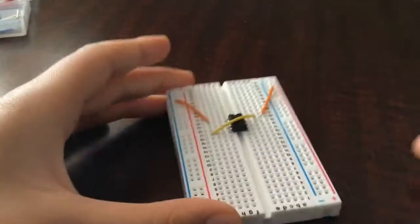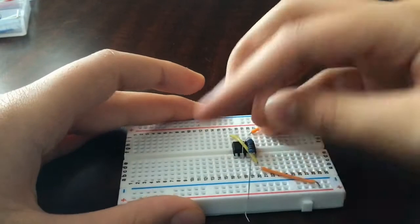Place a 68 kilo ohm resistor, or your timing resistor, between pin 6 and the positive rail.